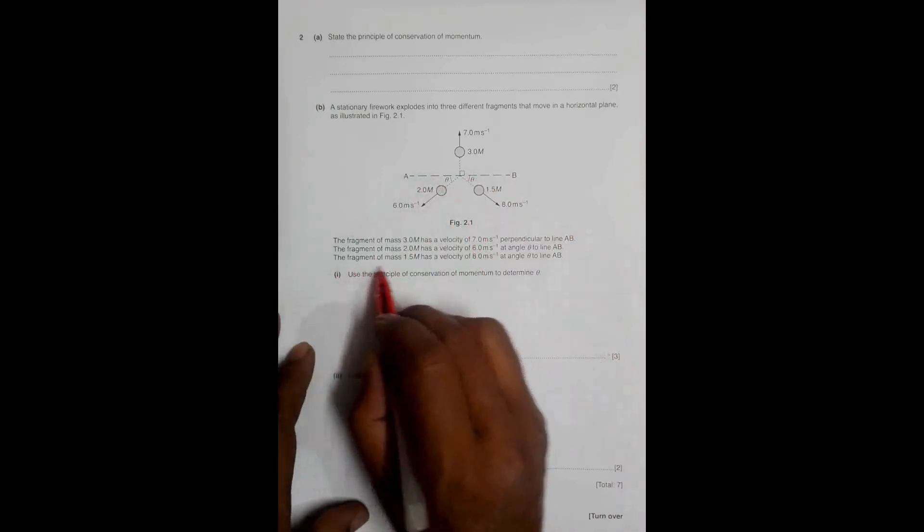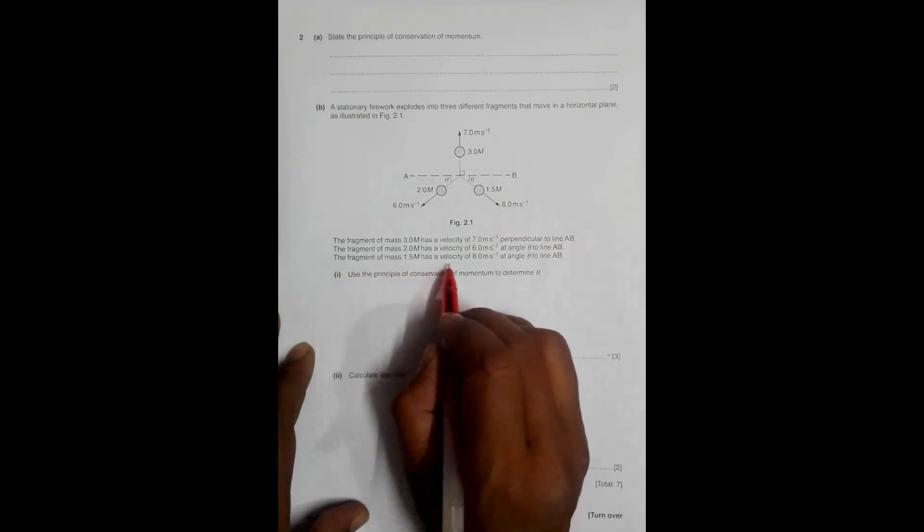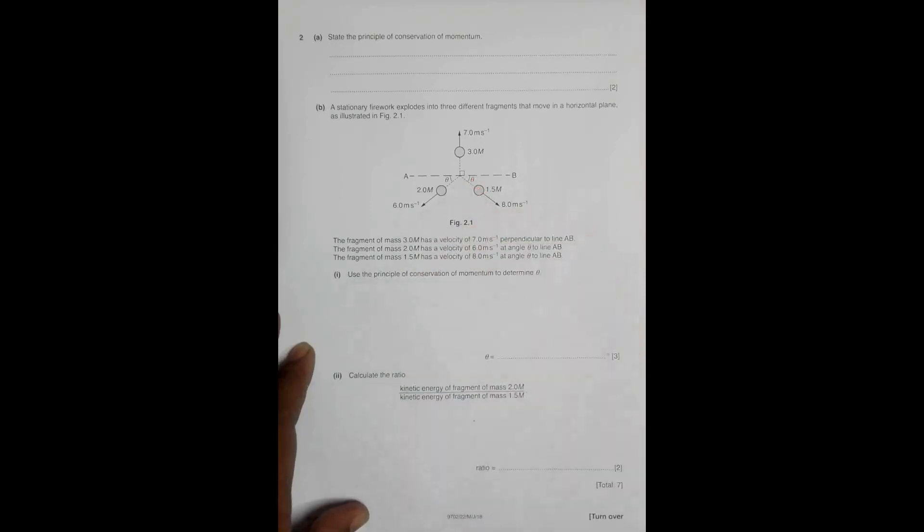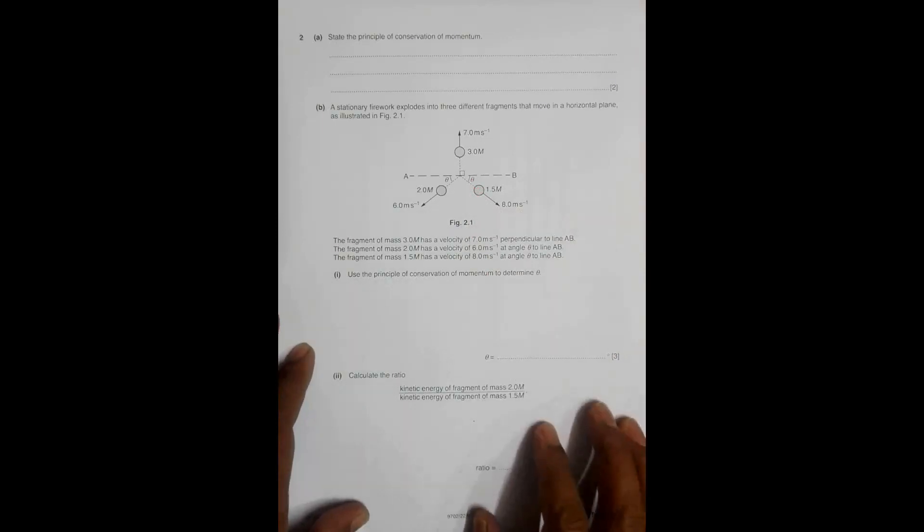And the fragment of mass 1.5m has a velocity of 8.0 meters per second at an angle theta to line AB, but on the other side. We have to use the principle of conservation of momentum to determine the angle theta.